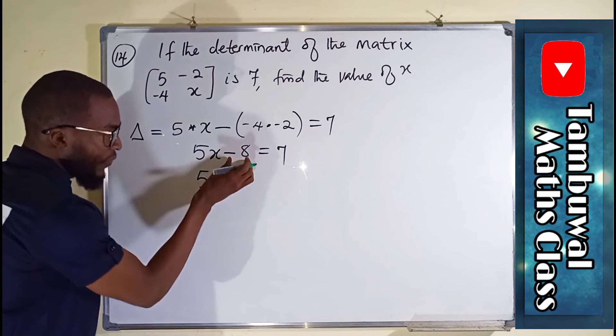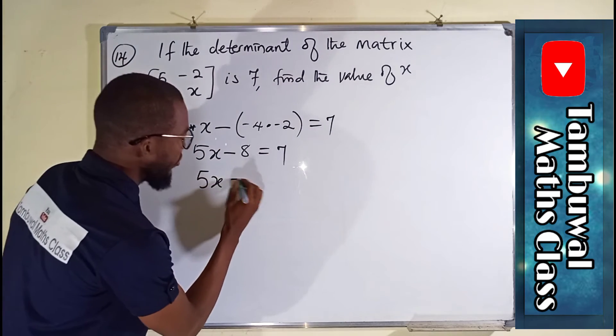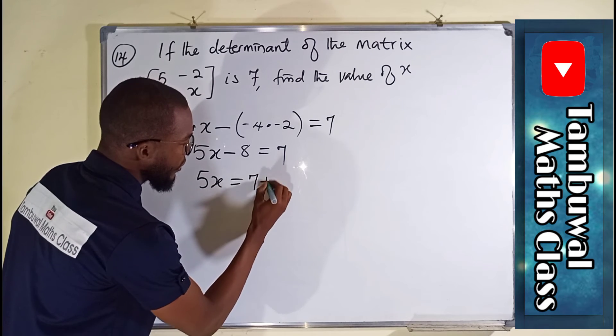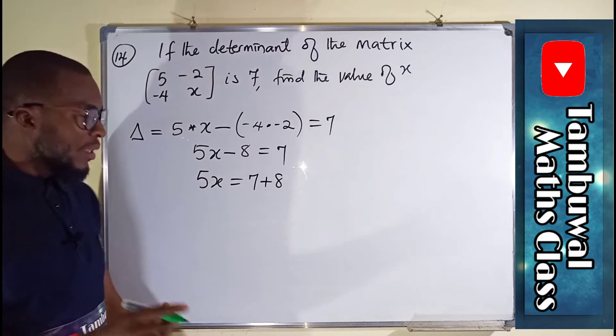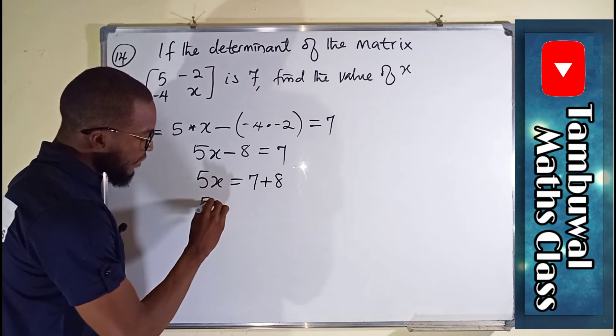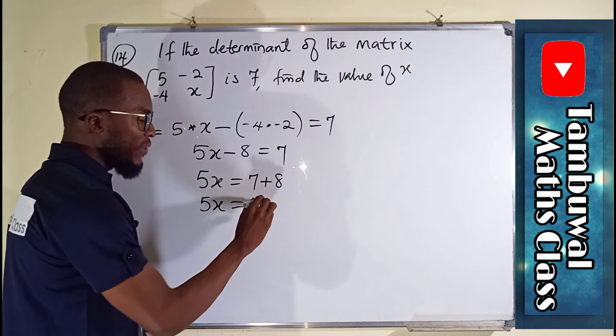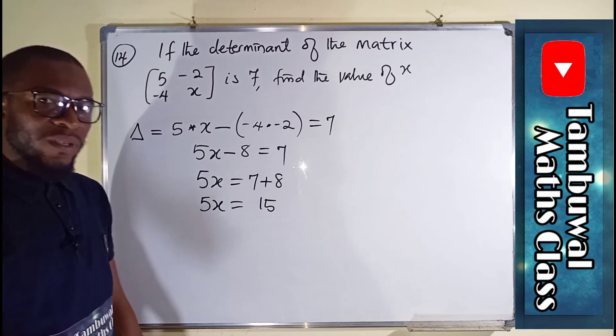5x, if negative 8 crosses over, it becomes positive. So we have plus 8 instead of minus 8. 5x here will be equal to 15 because 7 plus 8 is 15.